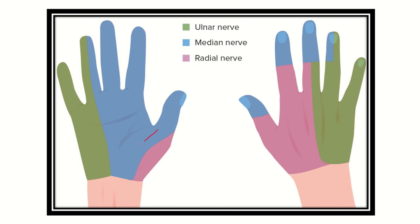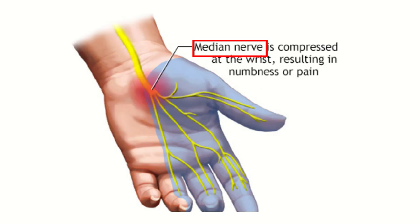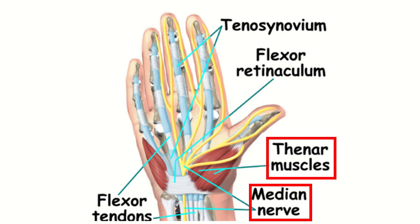The thenar area is mainly supplied, in terms of sensory supply, by the median nerve. In the second picture it is also clear that it is the median nerve, and this median nerve provides cutaneous innervation to the thumb, index, middle finger, and half of the ring finger.